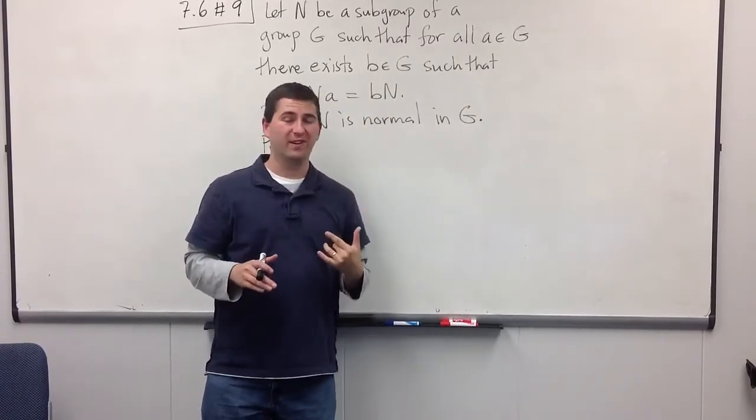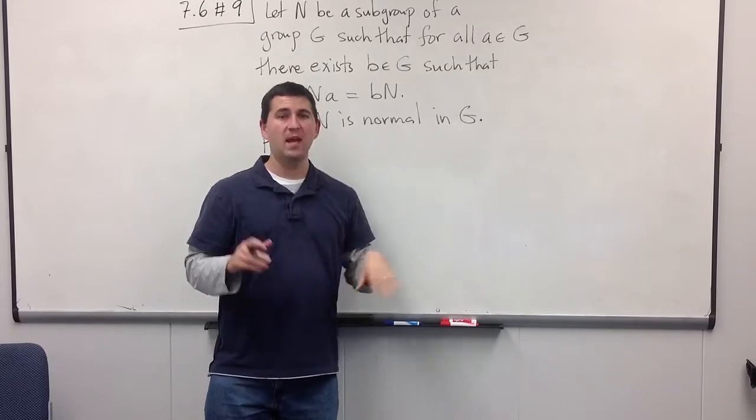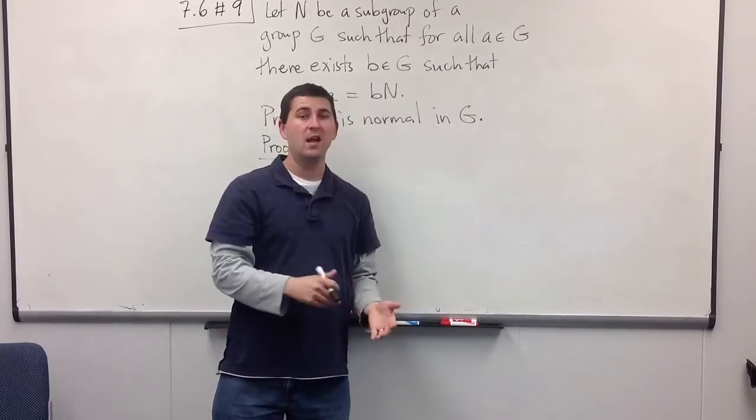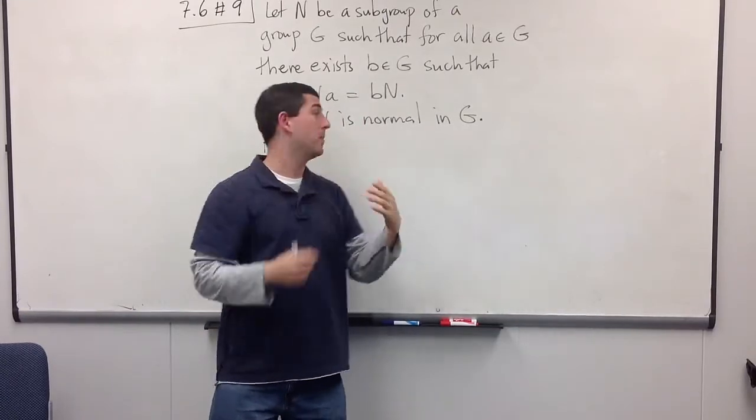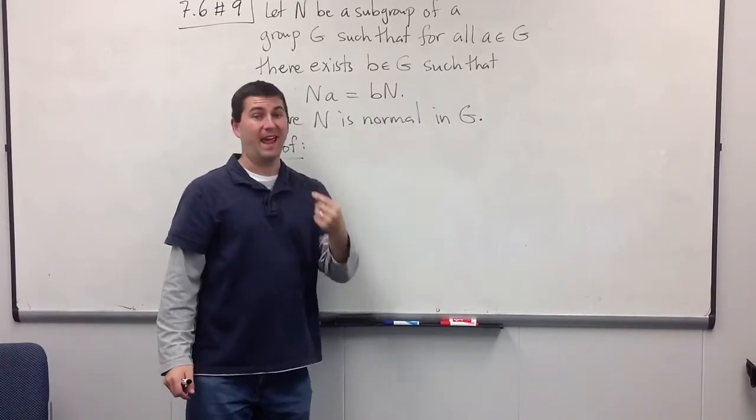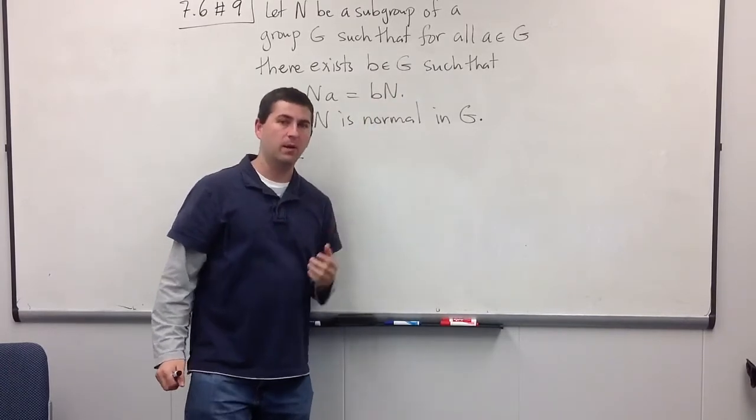What we want to prove is that they can't get jumbled up. As soon as you know that all the left cosets are the same as all the right cosets, then you know they actually have to match up in the sense that NA will not just equal BN, but will equal AN. Alright, so how are we going to prove this?